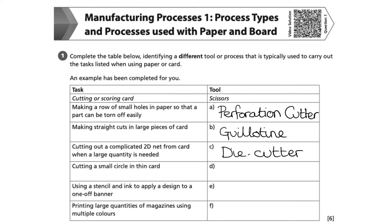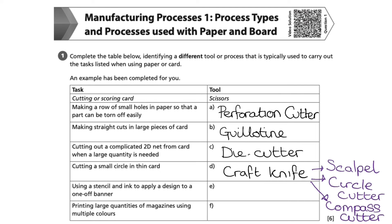Cutting a small circle in thin card is something I am sure you have done before, and the tool you would have used is a craft knife. In addition to the term craft knife, the examiners would have also accepted scalpel, circle cutter, or compass cutter. E asks us to identify the tool required for using a stencil and ink to apply a design to a one-off banner.